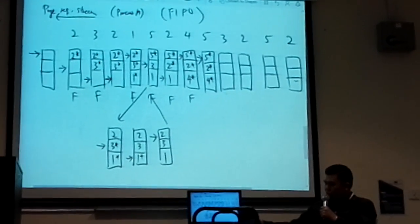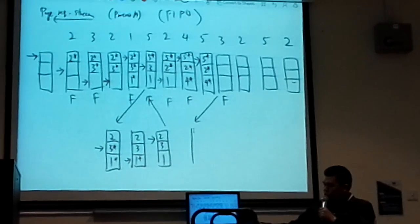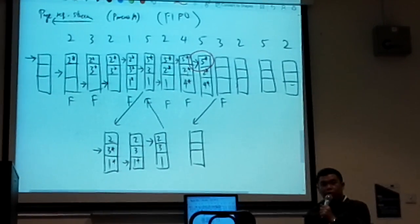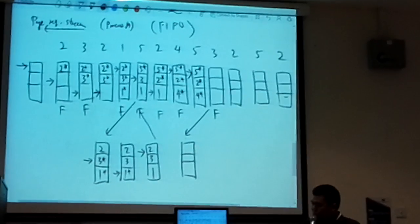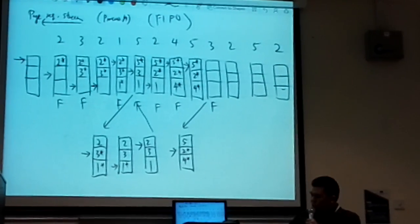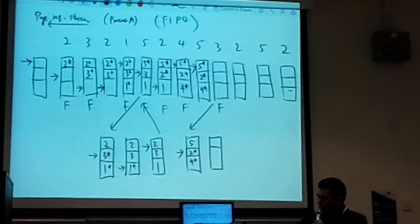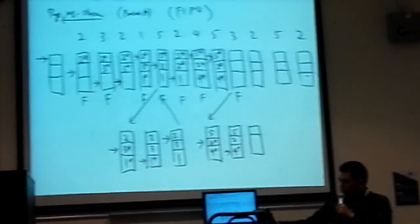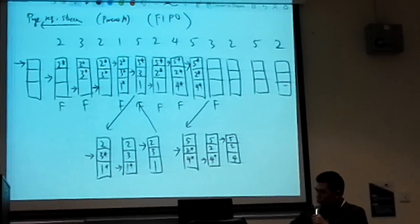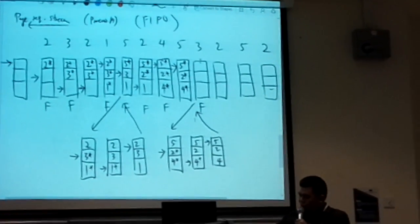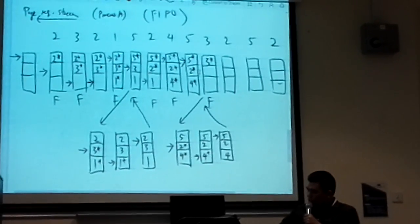Page 3 is not found. The pointer is at the first frame where USB is 1, so I cannot use it — I set it to 0 and move. After that I'm pointing at the second frame, also USB 1, so I set it to 0. I move — still pointing at USB 1, set it to 0. I move again. Now finally we are pointing at USB 0. I put page 3 inside, set it to 1, and move.